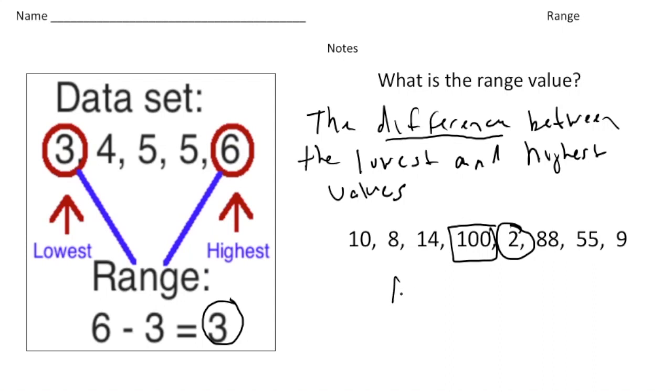So I need to find the difference. When I do 100 take away 2, that gives us 98. So 98 is the range of this data set. All right, so now that you understand a little more about range...